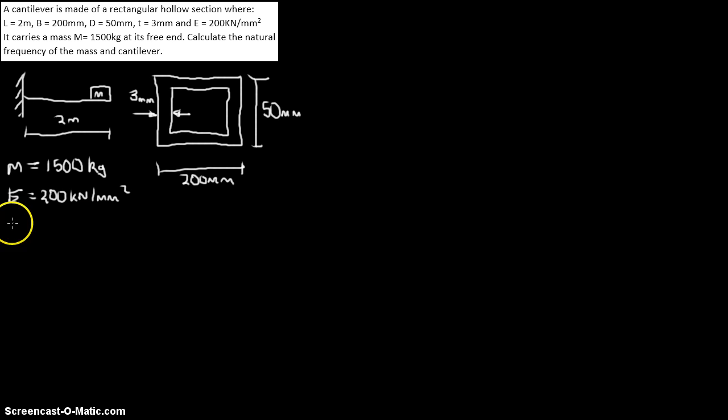Also important to note down everything else. The mass, which is 1,500 kilograms and the elastic modulus E, which is equal to 200 kilonewtons per millimetre squared. Now, it's important to write down all these units that we are given in the question so there's no confusion later on when we're doing unit conversion.